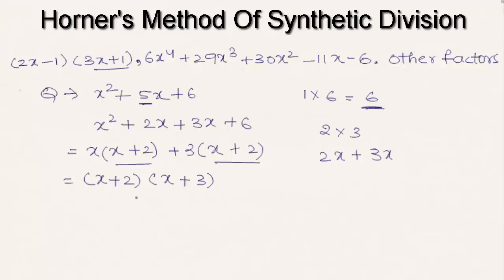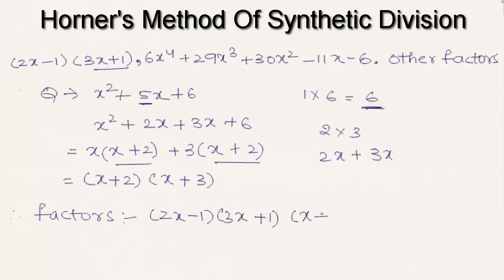Therefore the other factors of the polynomial are (x+2) and (x+3), and we can conclude that the complete factorization of the polynomial is (2x-1)(3x+1)(x+2)(x+3). This was a basic introduction on how to solve an example on Horner's method of synthetic division. Hope you understood the concept. Do like and subscribe to vteachacademy.com.